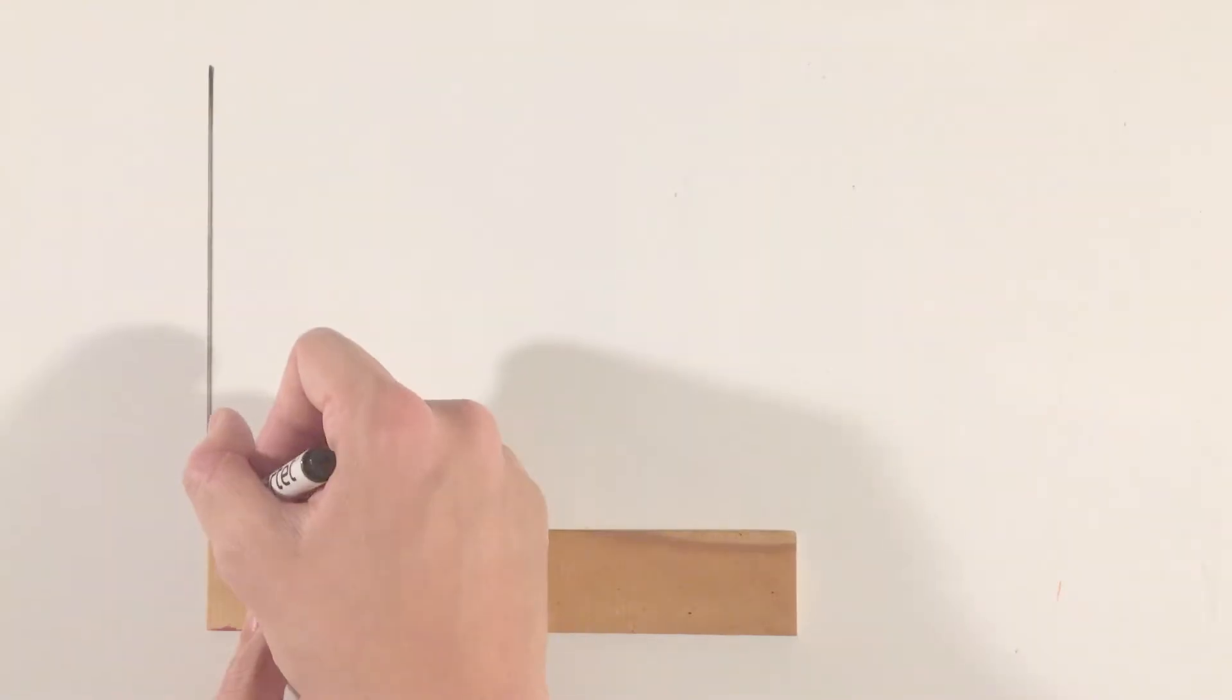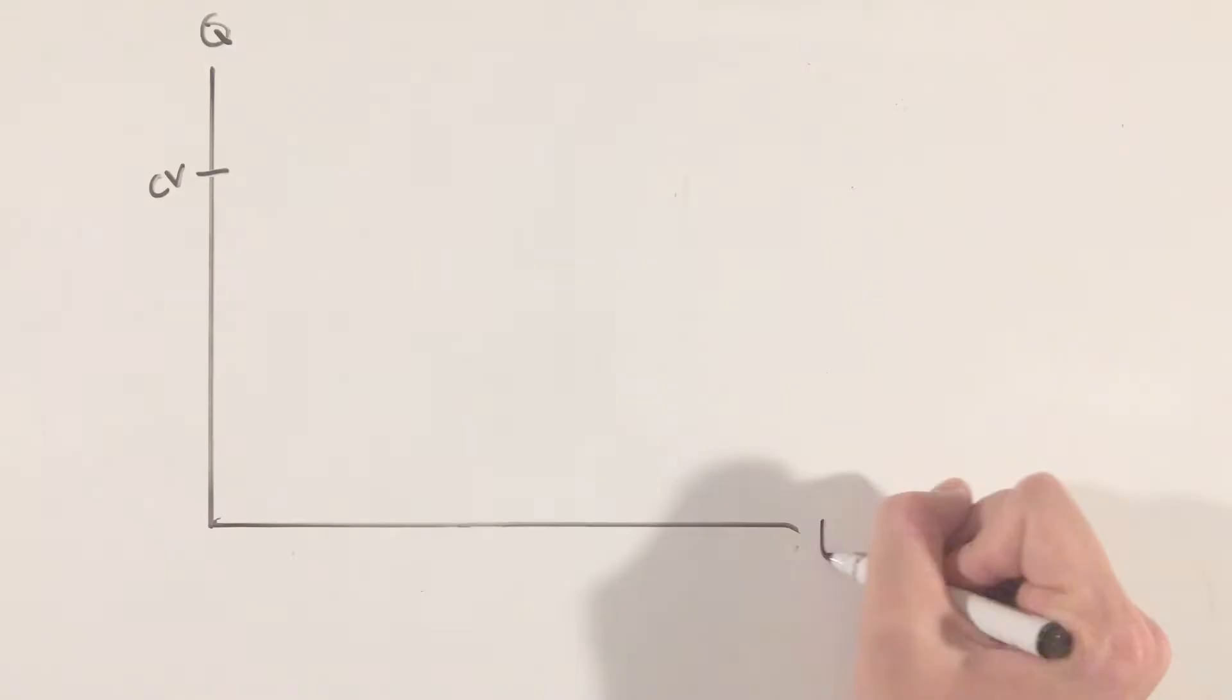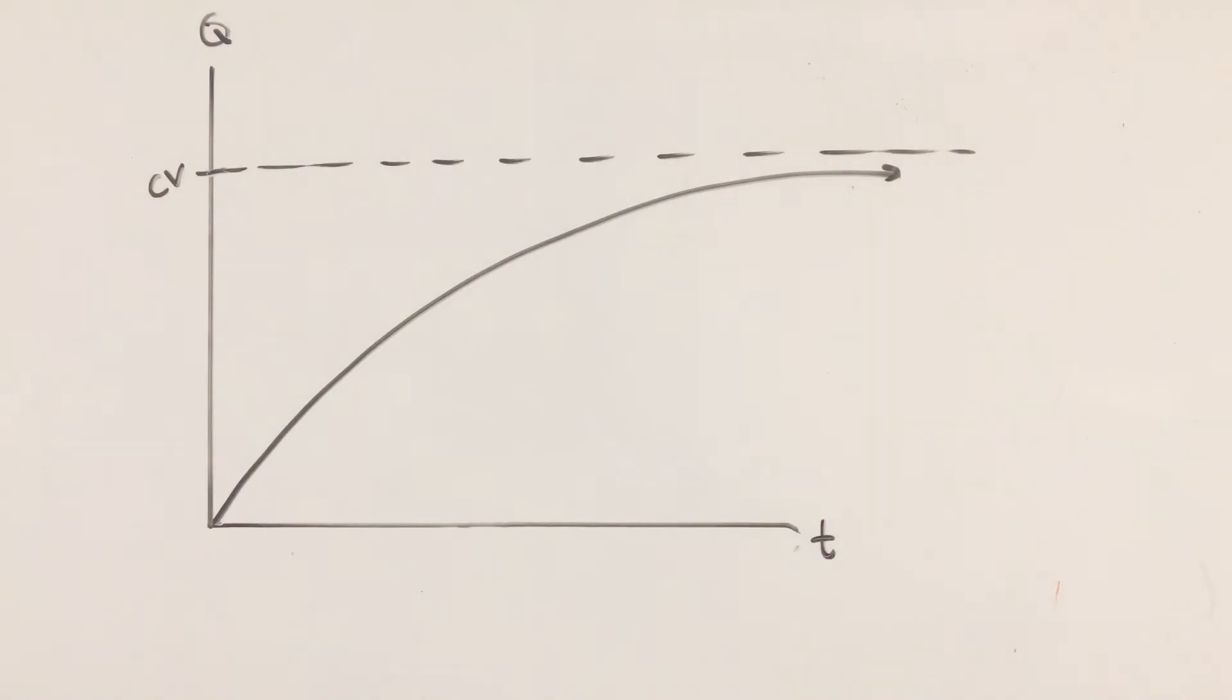Now, the graph of this equation looks something like this, and this graph should make intuitive sense. At time equals zero, our capacitor begins to charge up, slowly but asymptotically approaching a charge that opposes the battery's voltage.